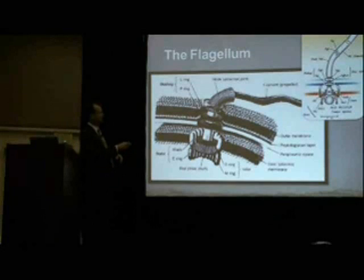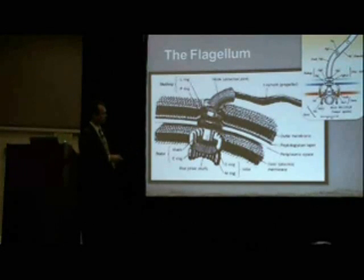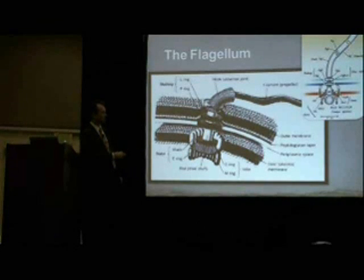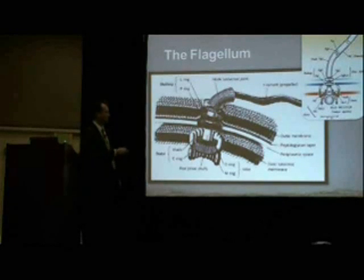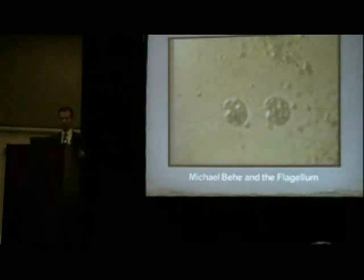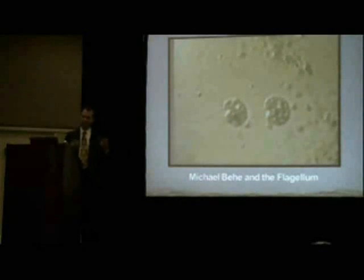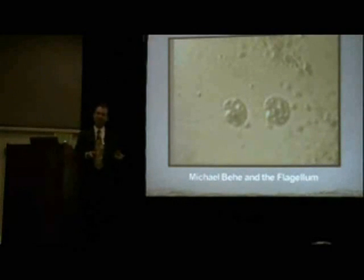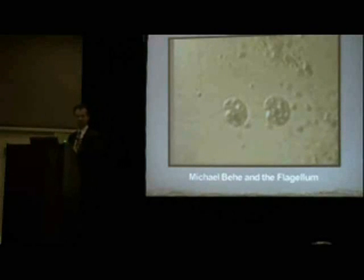Here's the flagella. There are lots of parts — 40 or 50 parts, 40 at minimum. It looks like a machine, like a little motor. But you can take away all these parts and still have just this little piece left. It doesn't spin or do anything, but it still works as a toxin injector. It doesn't work as a flagellar motility system, but it does work. So here's the argument from Behe — I'm going to present a little clip from Behe and his argument, and then a little clip from Kenneth Miller and how he argues against Behe.